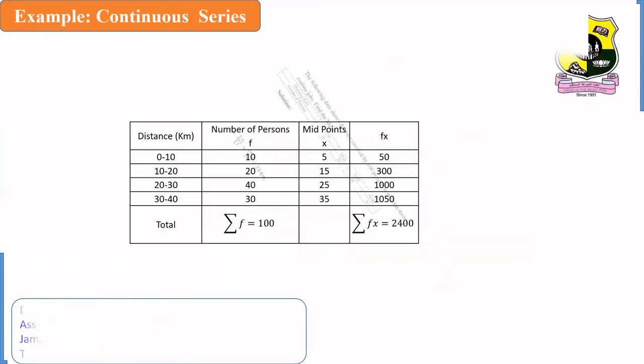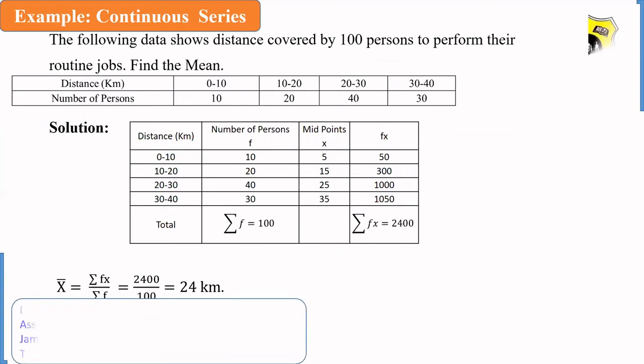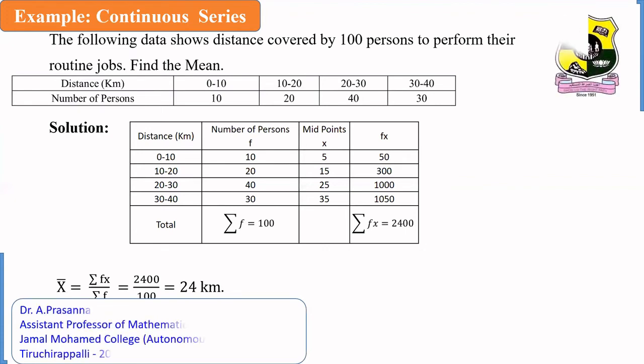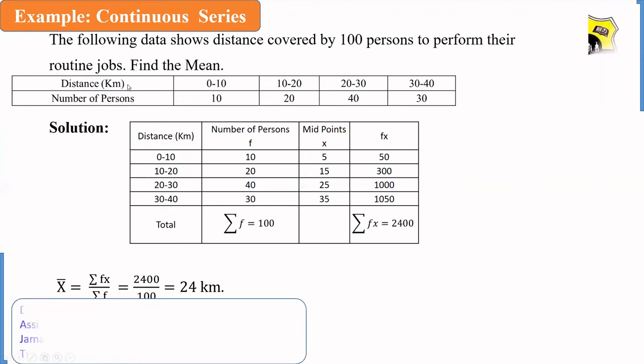Now, I shall explain how to calculate the arithmetic mean for continuous series. Continuous series means where frequency of a variable are given, but the variable is with class interval. Here, the following data shows the distance covered by 100 persons to perform their routine jobs. Find the mean. Distance in kilometer, number of persons is here. In 0 to 10, there are 10 persons. 10 to 20, there are 20 persons. 20 to 30, there are 40 persons. 30 to 40, there are 30 persons.